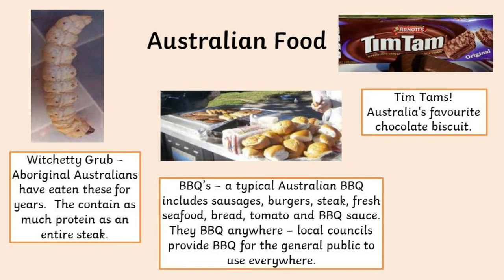There's also the witchetty grub, originally eaten by Aboriginal Australians for years — they actually contain as much protein as an entire steak. Australia is also very well known for barbecues, perhaps due to the weather, with things like sausages, fresh seafood, steak, bread, tomatoes, and barbecue sauce. In Australia, barbecues are found everywhere — councils have them in parks or near the beach so families can get together. And then there are Tim Tams, said to be one of Australia's favourite biscuits.